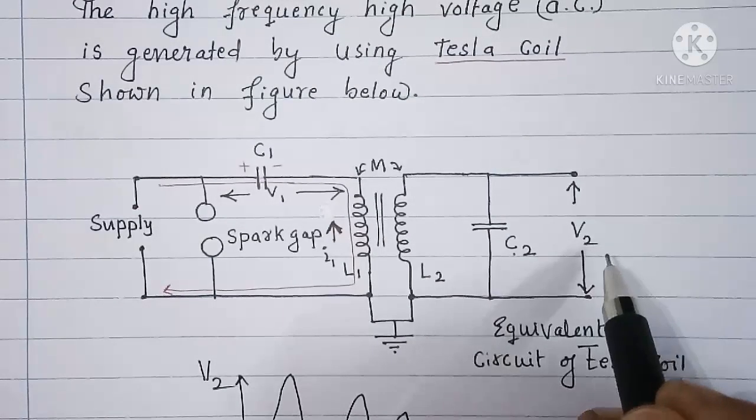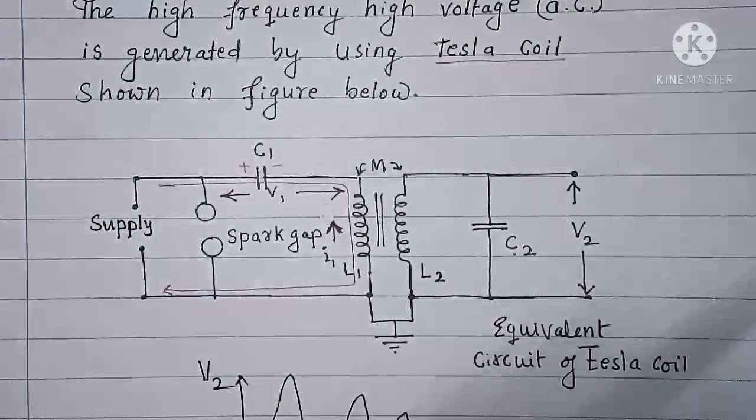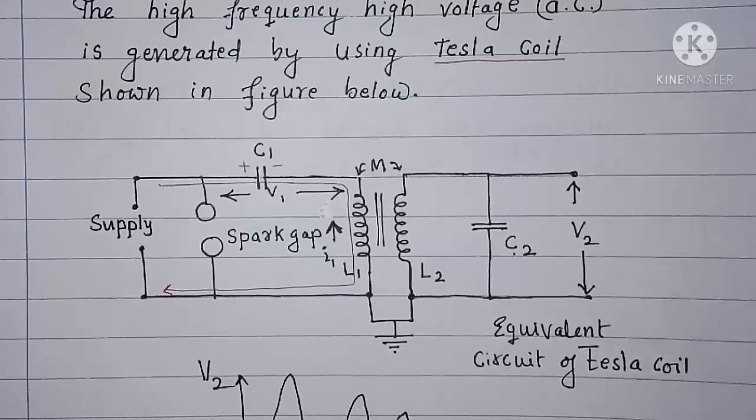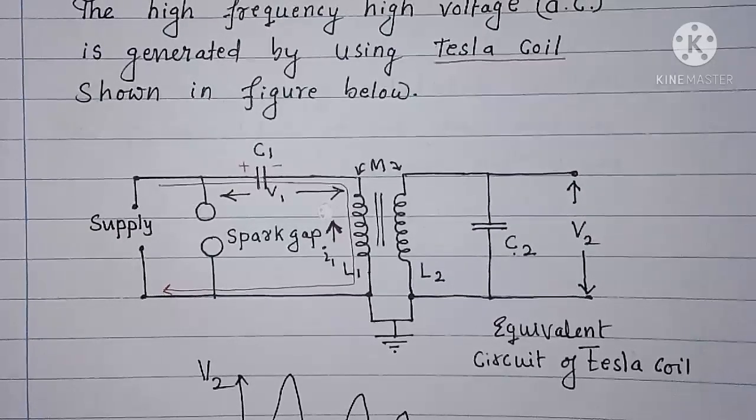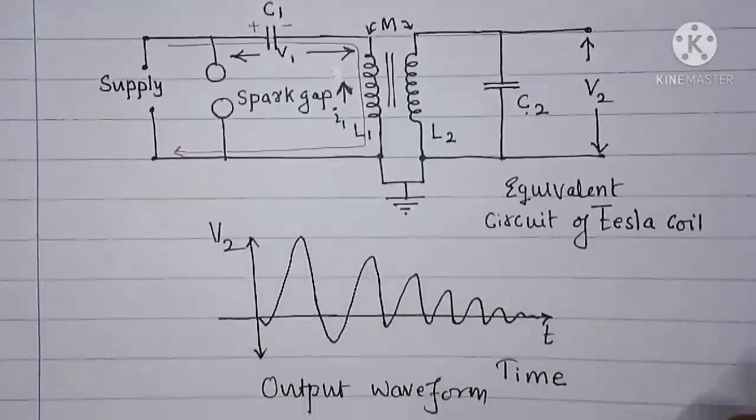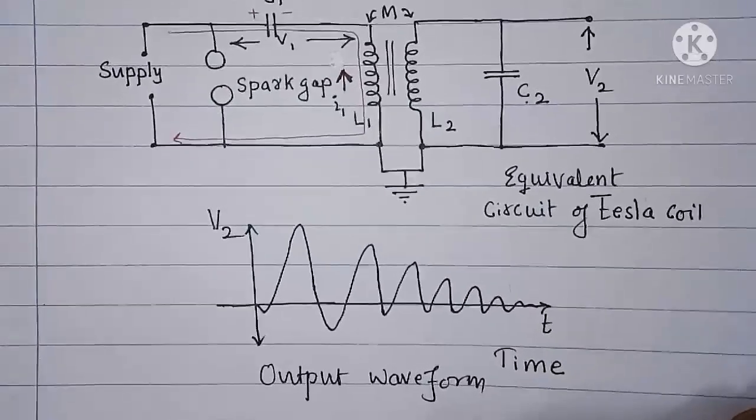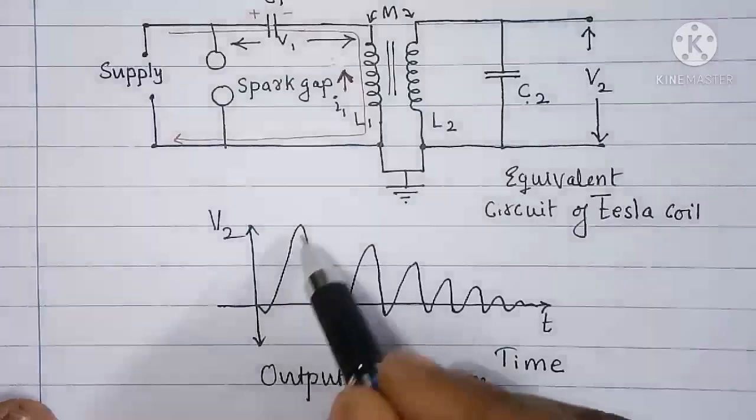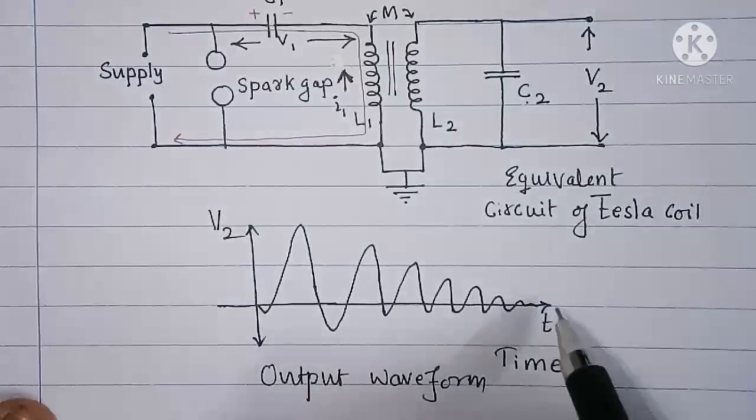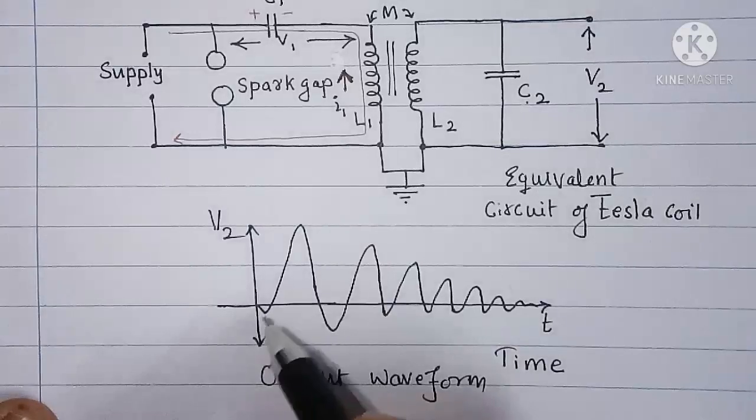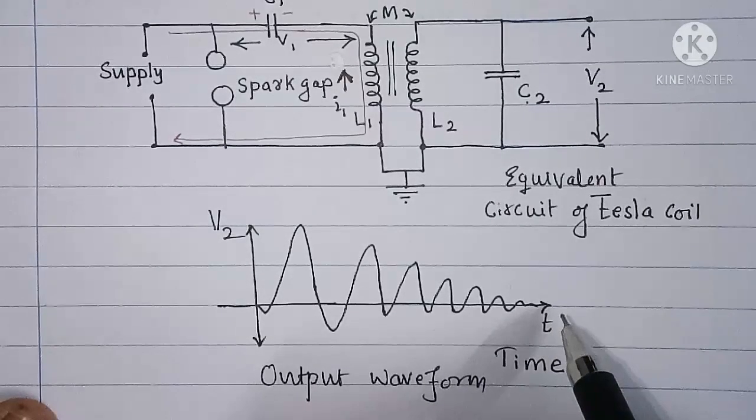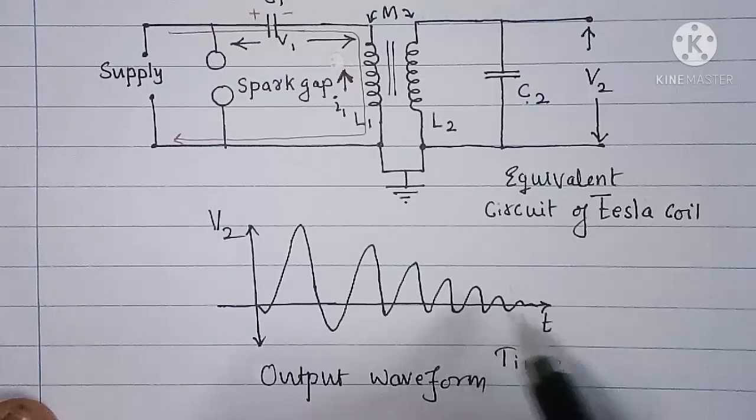And V2 has higher magnitude and higher frequency. The waveform of output voltage V2 may be seen here now. You can see the V2 has got damped oscillations. That is with the time the magnitude of V2 goes on decreasing. The frequency of oscillation is very high here.